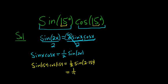This is equal to 1 half and then 2 times 15 is 30. So sine of 30 degrees.